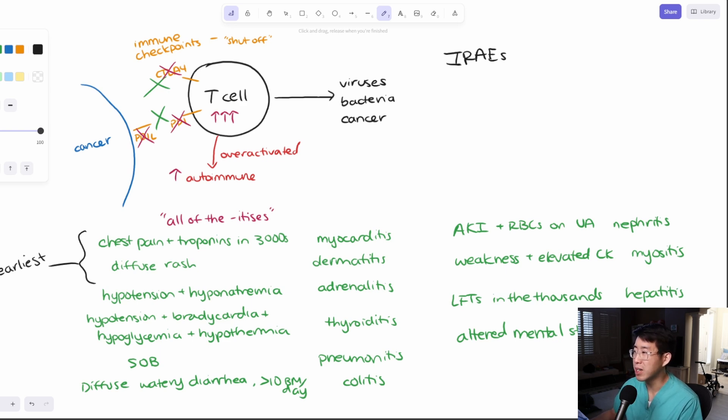And so the typical timing is going to be around three months is when you start to see some of these irAEs. You do also have this thing called delayed or chronic irAEs. And these, this can basically happen at any time, sometimes even a year out from when they receive their immunotherapy.